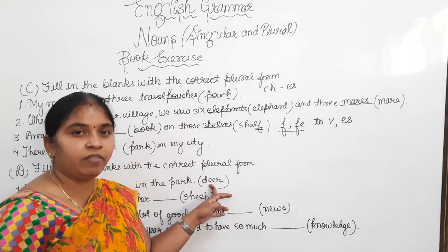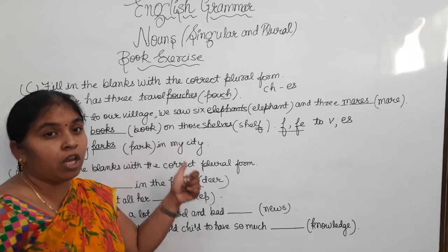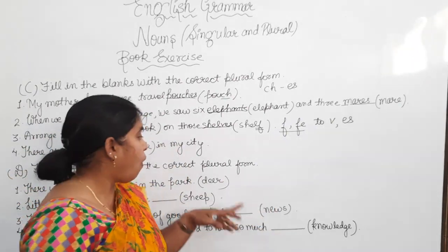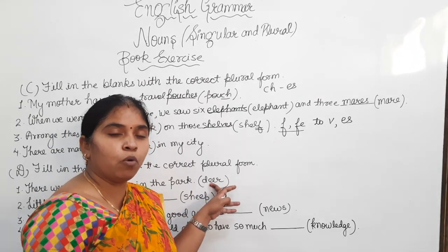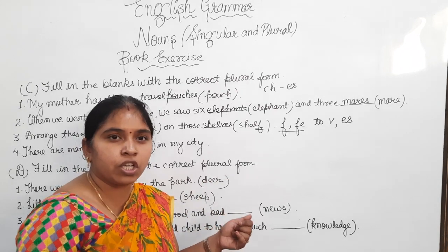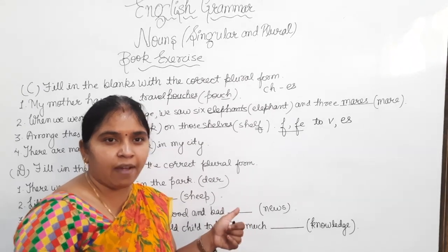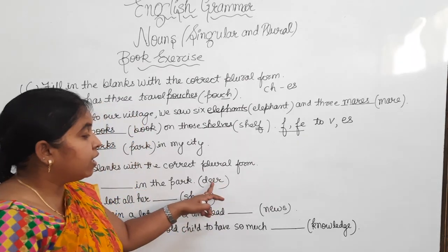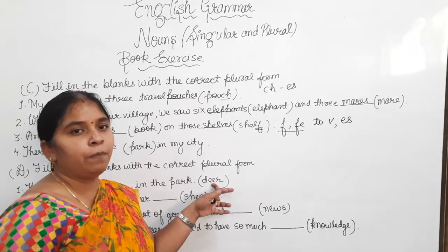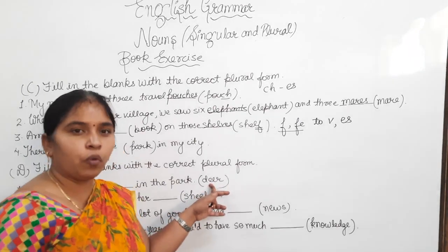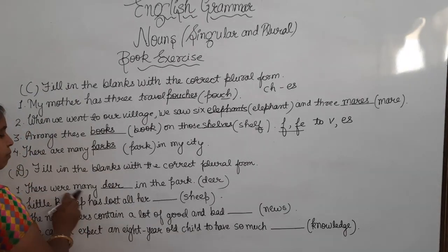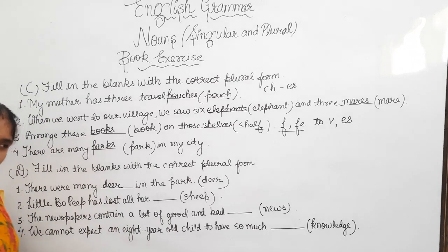Now, students, when we have learned the rules of singular and plural noun, we learned that some nouns are same in both singular and plural noun. And deer, deer, sheep, fish, we have learned these type of nouns. So here, deer is singular and the plural of deer is deer only. So here, what will come? Deer. There were many deer in the park.